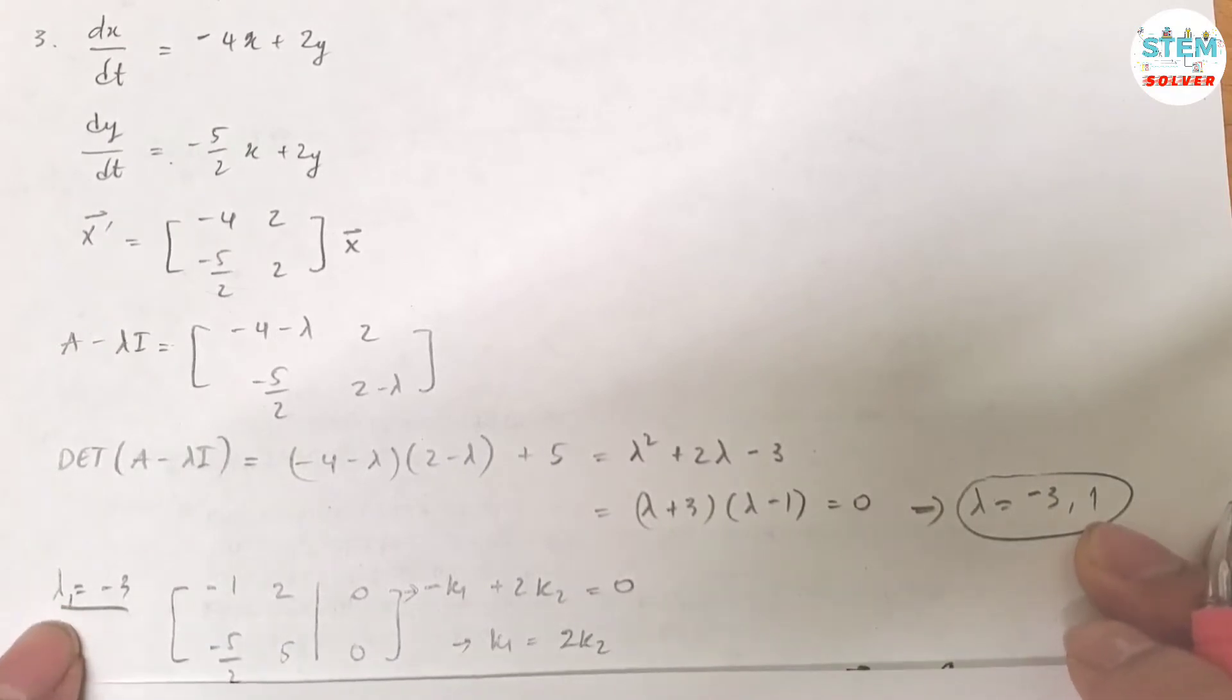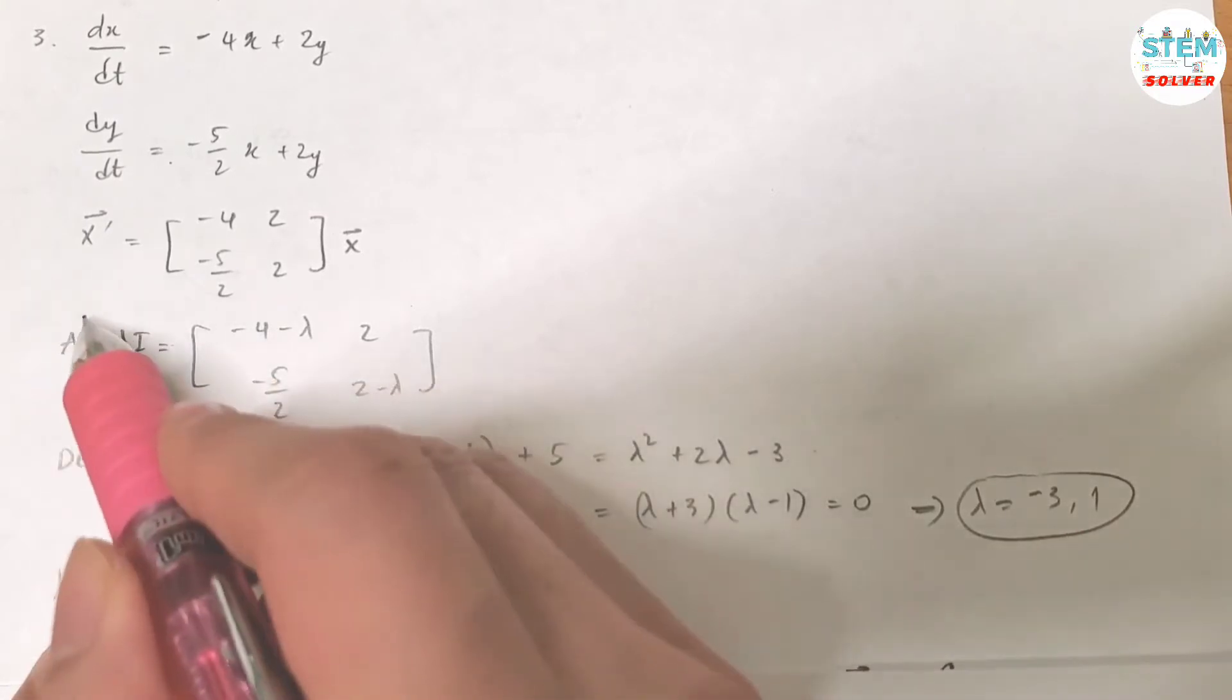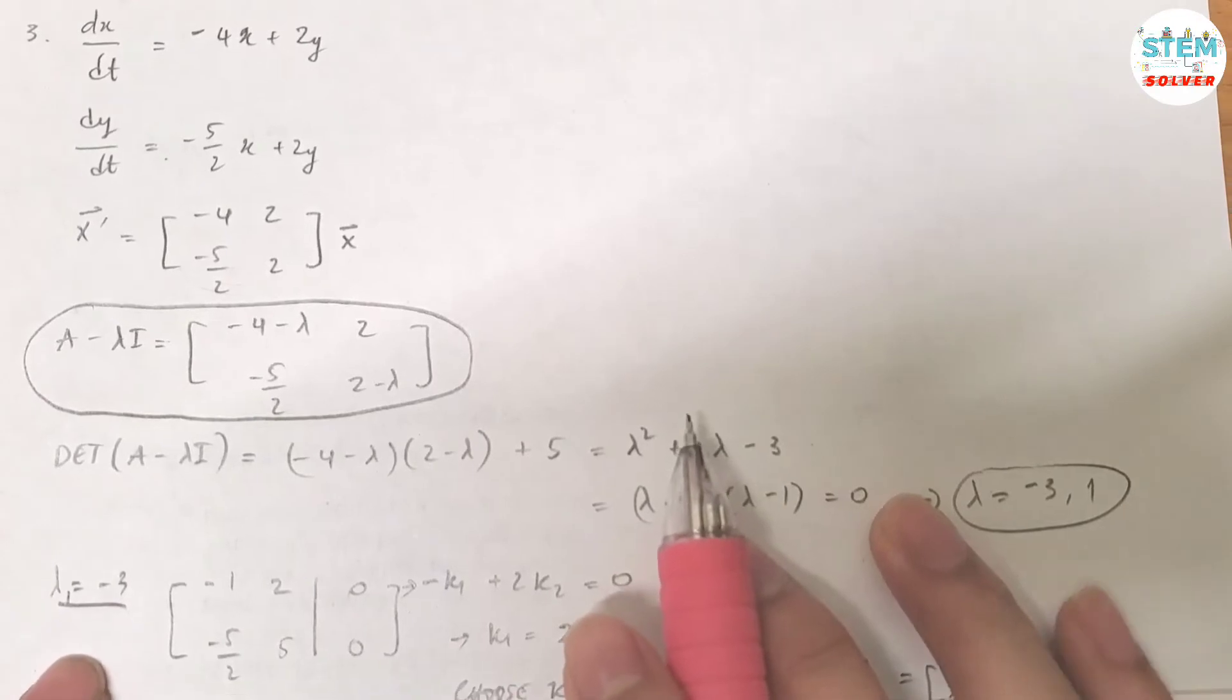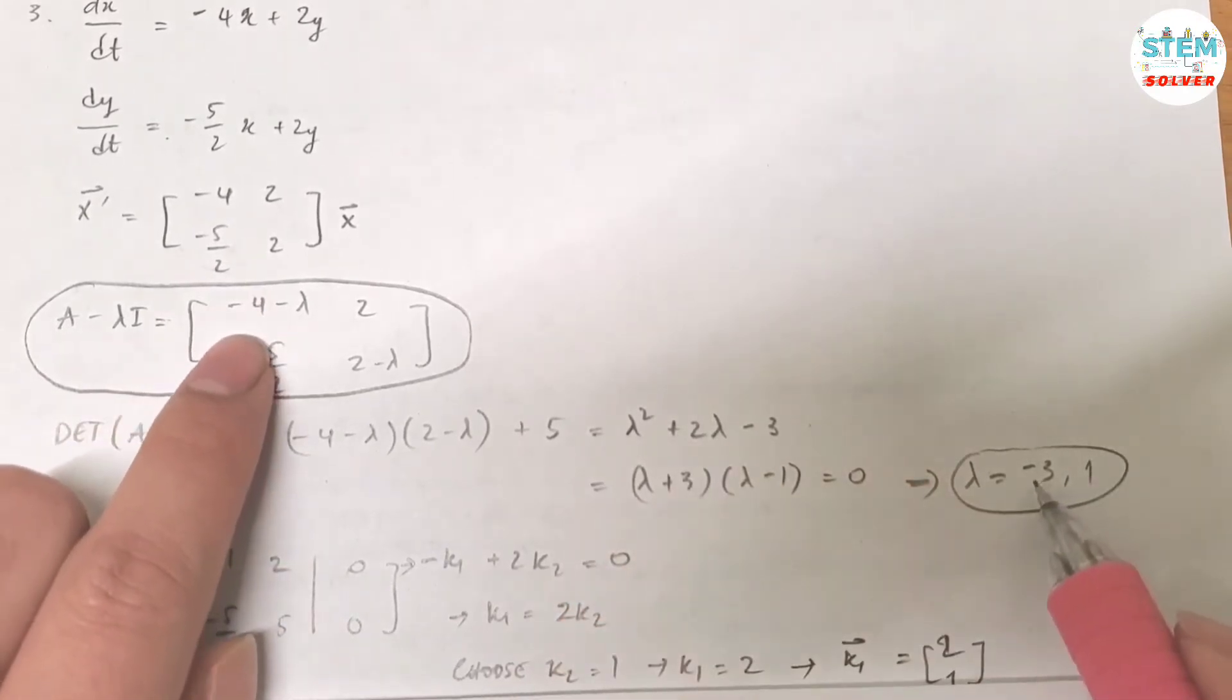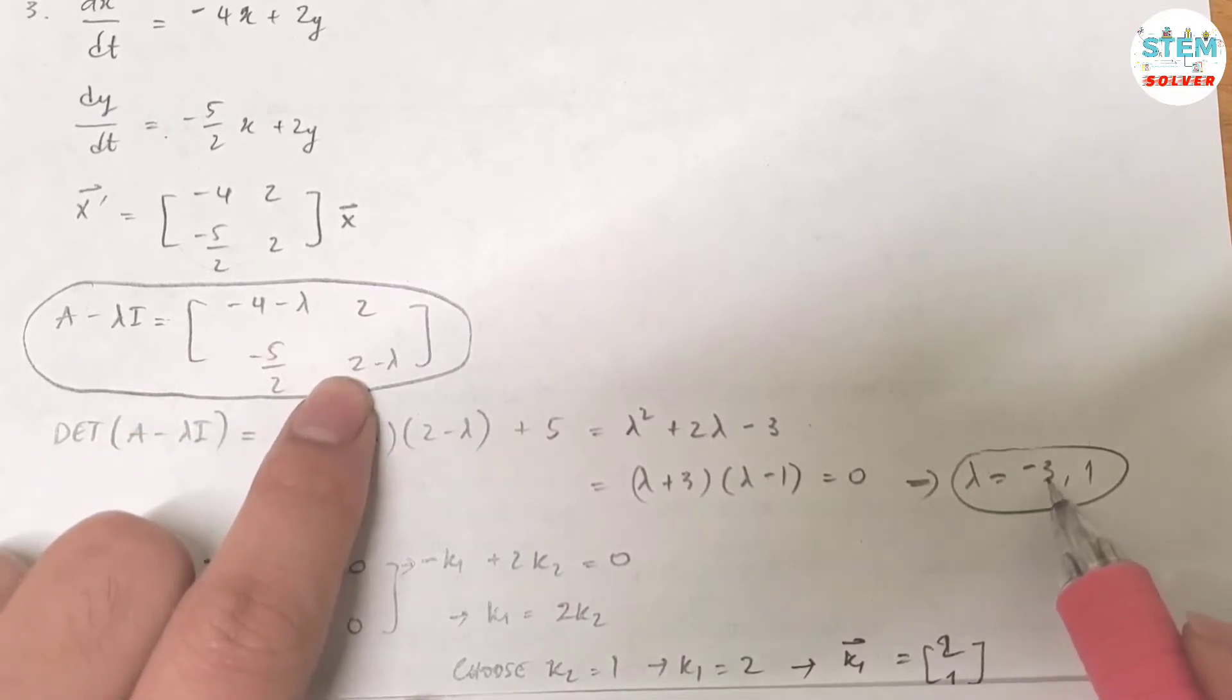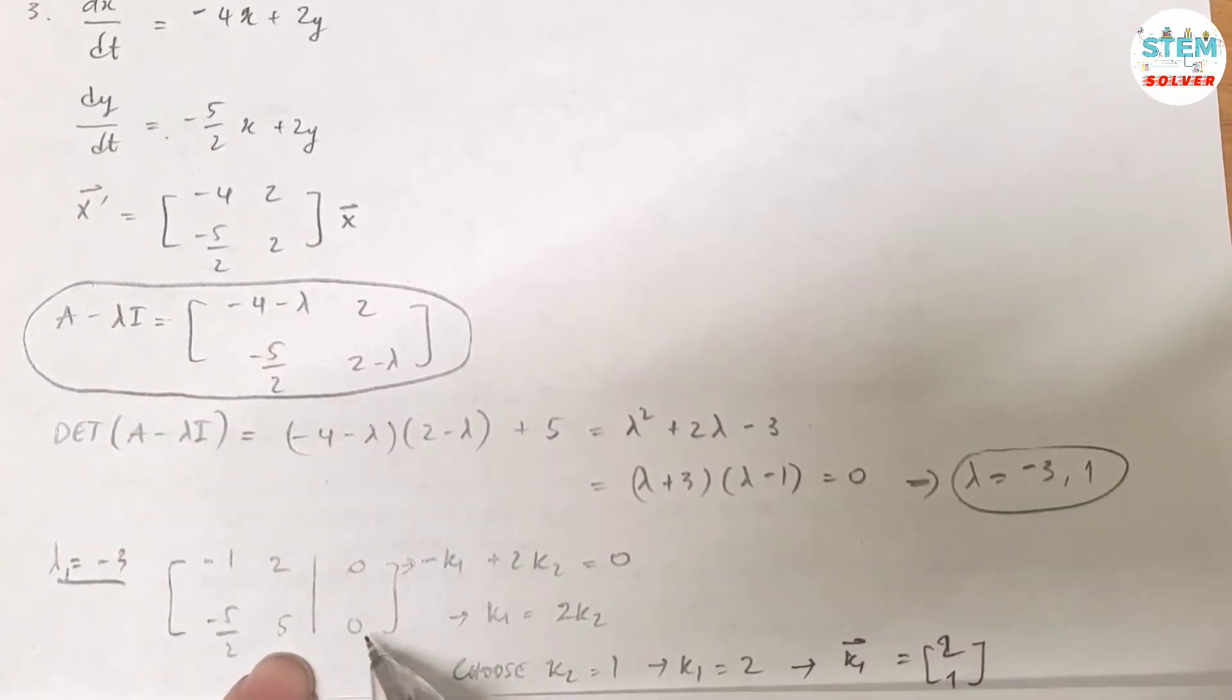So lambda, let's take a look at the case where lambda equals negative 3. Plug it into here. That gives you this matrix. So negative 4 minus negative 3, that gives you negative 1, 2, negative 5 halves, 2 minus negative 3 is 5. And then you augment it with 0.